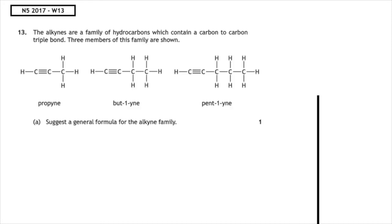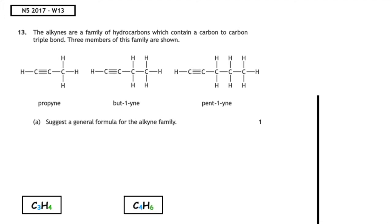This past paper question is from the National 5 2017 written 13. The alkynes are a family of hydrocarbons which contain a carbon-to-carbon triple bond. Three members of this family are shown: propyne, but-1-yne, and pent-1-yne. Suggest the general formula for the alkyne family. First, we write the molecular formula for each member. Propyne is C3H4, but-1-yne is C4H6, and pent-1-yne is C5H8.